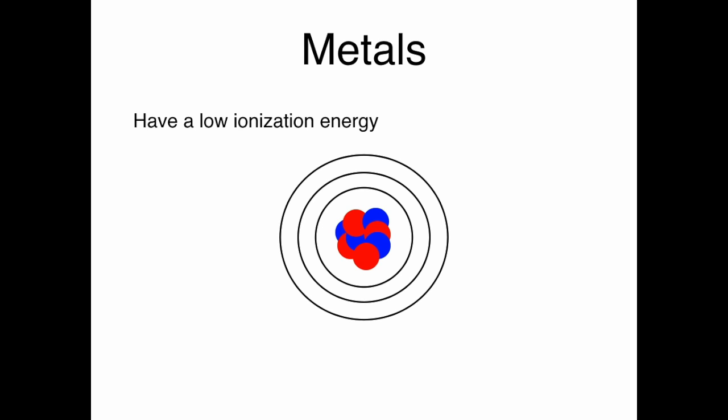Atoms with particularly low ionization energy levels are called conductors. In particular, metals are conductors. They have a low ionization energy, so it's very easy to add just a little bit of energy and pry an electron off, as depicted in this picture here.